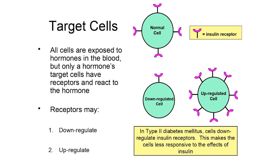There are people that have reversed type 2 diabetes mellitus through up-regulation of their cells. To up-regulate the receptors, you have to decrease the chronically high insulin levels caused by overeating, eating too many simple sugars, eating too often, and not exercising. If you start doing those things so that your blood sugar isn't so high, your insulin levels will go down. If insulin levels go down, your cells may start to up-regulate to the point where they become responsive to insulin again at normal levels and you no longer have type 2 diabetes mellitus.